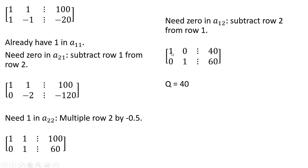Now we're basically finished. The equilibrium level of output: the Q coefficient is 1, so Q equals 40 — equilibrium output is 40. The coefficient on the price term is 1, so price equals 60. And that is how you solve a system of two equations and two unknowns with the Gaussian method.